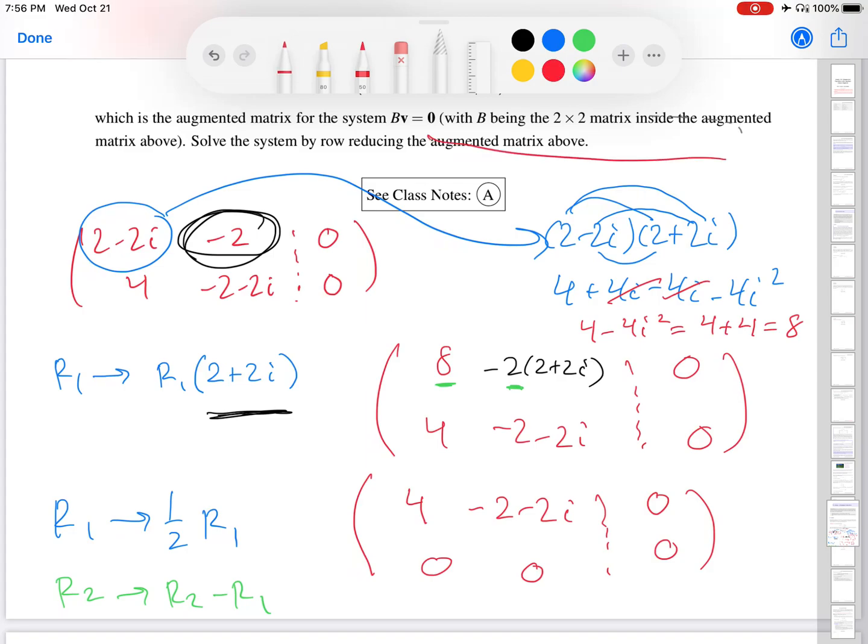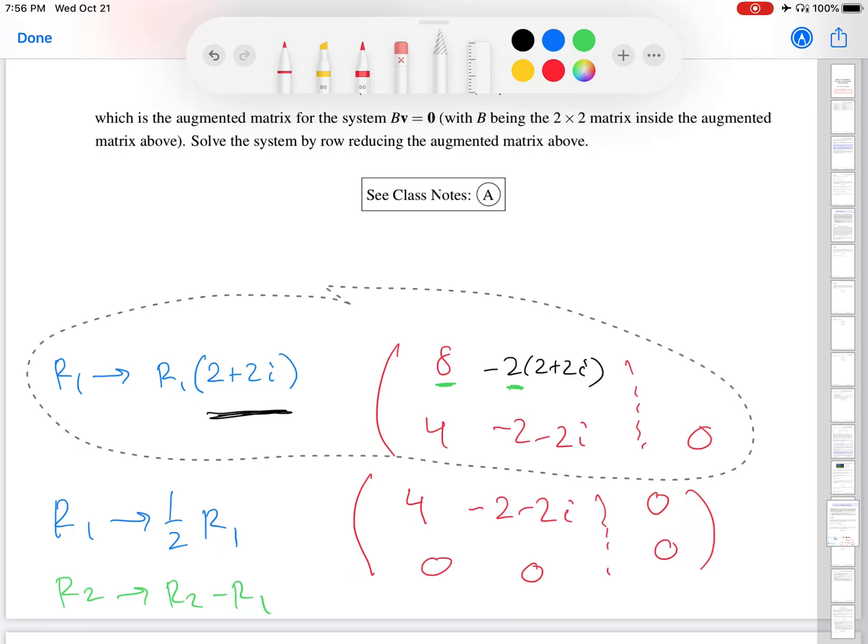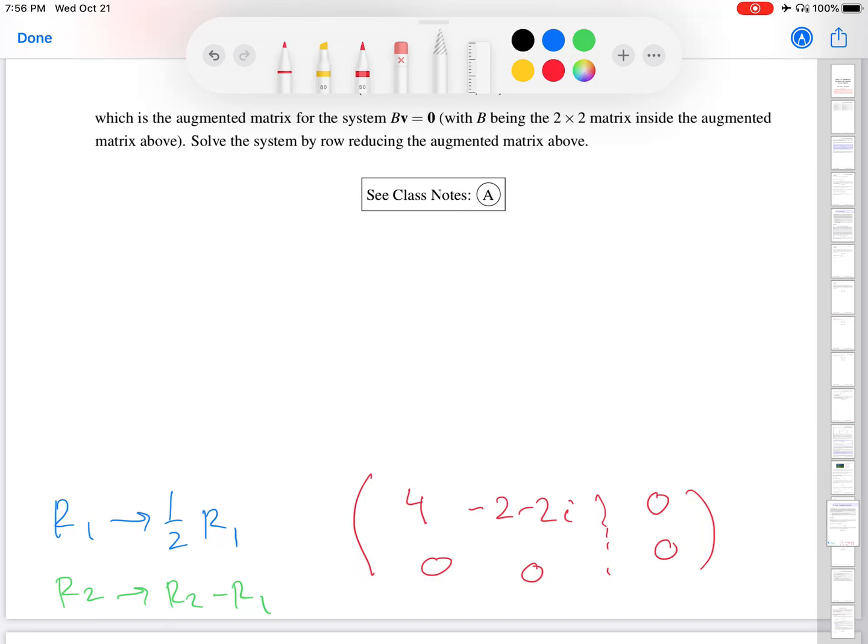OK, so at this point, we have done all the operations that we need to do to actually solve the system. So that's what I'm doing now. I'm going to erase and give us some room here. So if I put this back in the system form, this is 4V1 plus, or factor out a negative one, minus 2 plus 2i V2 equals zero. You might be wondering, where did the V1 V2 come from? So that comes from here. So this is a system B matrix times V1 V2 equals zero zero. And this is the first row in that system. This is the first equation. This is the second equation.